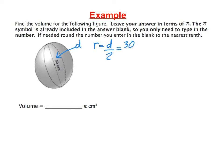So if we do 30 divided by 2, we get 15. So r equals 15 is the number we're going to need for the formula. Now we can go ahead and write down our formula for volume.